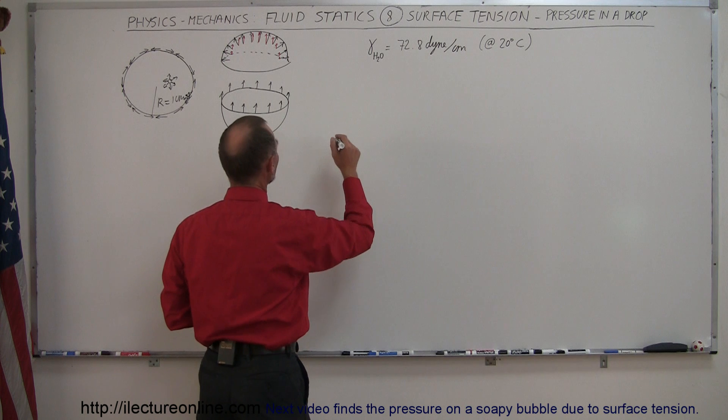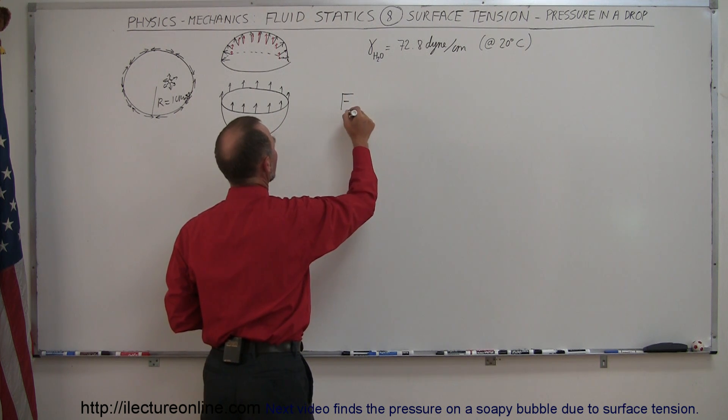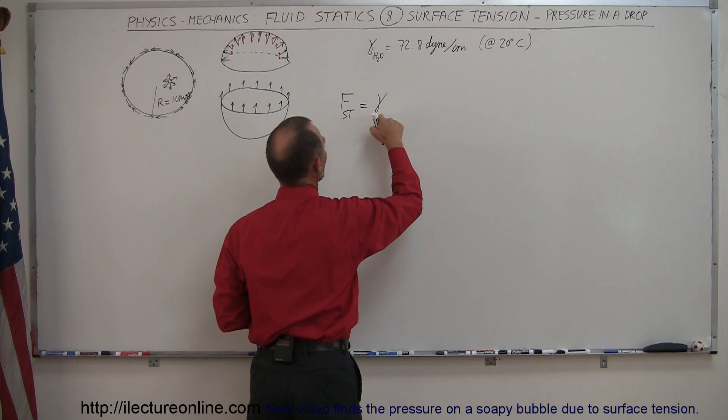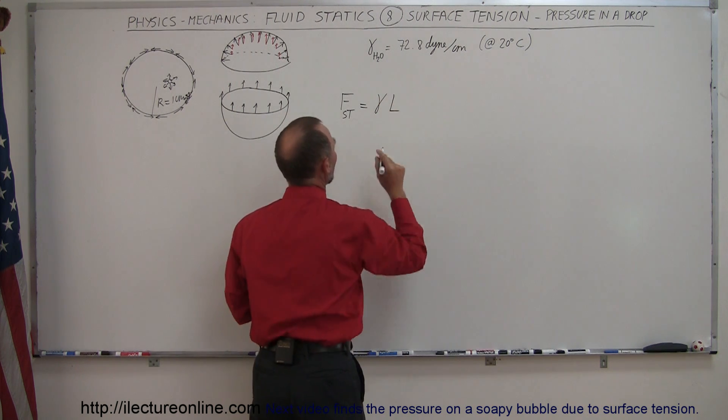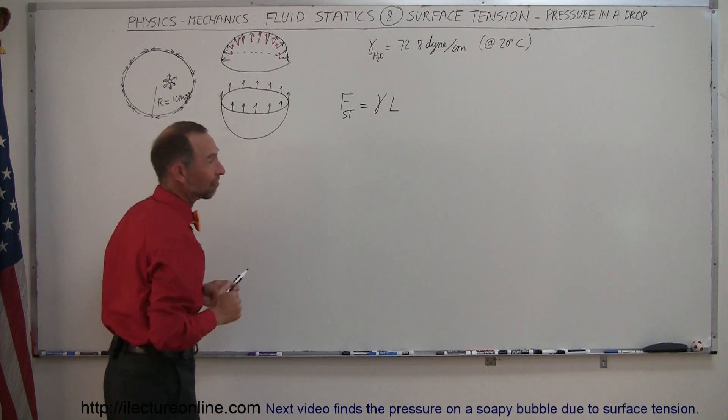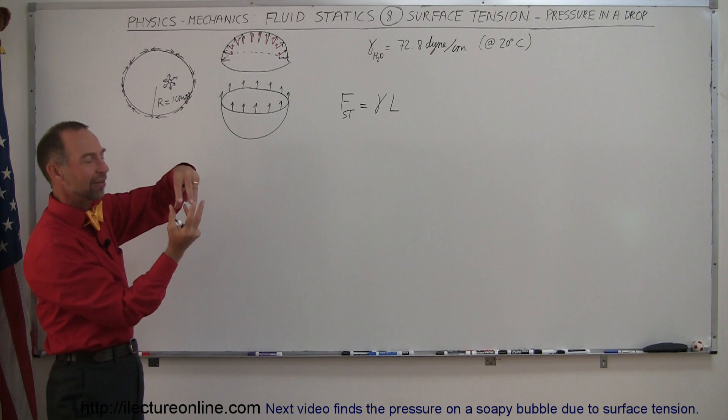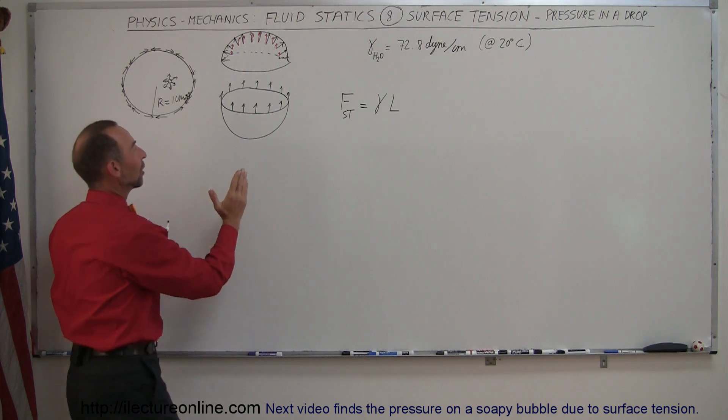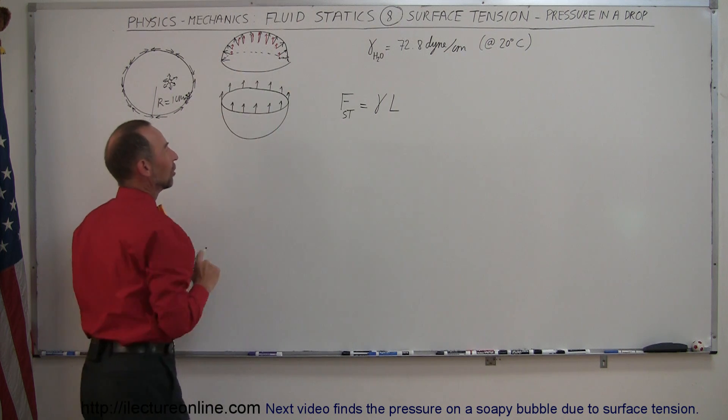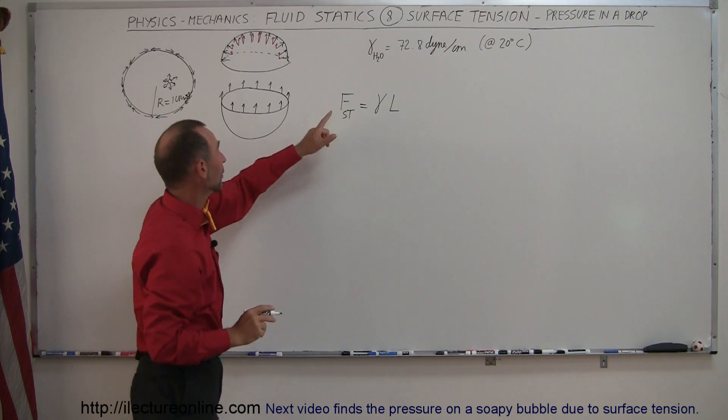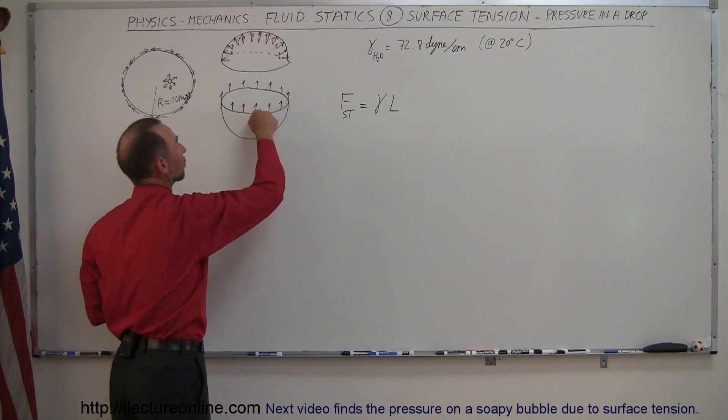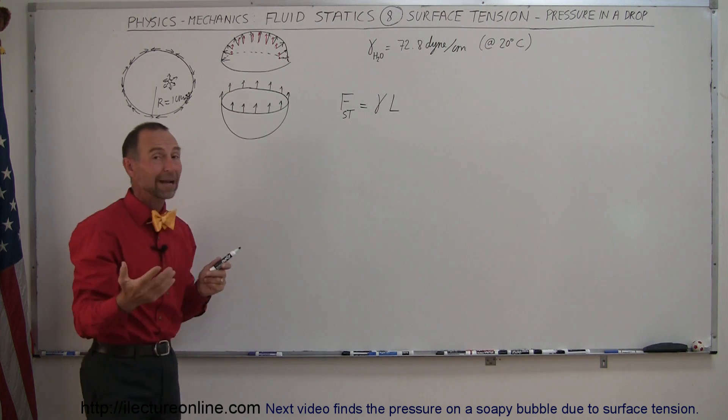So again, the force due to the surface tension, surface tension is equal to the coefficient of surface tension times the length along which this acts. Now what we're going to do here is we're going to take a water drop and slice it in half. And so you think about these two halves separated from one another. And of course, they would be attracting each other along the rim of that cross section.